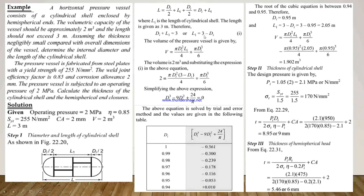Since the length is given as 3 m, L1 = 3 − Di, which is equation 1. Volume is given as 2 m³, and substituting into the volume equation: V = π·Di²·L1/4 + π·Di³/6. Putting the value of volume as 2 and simplifying the expression, we get Di³ − 9·Di² + 24/5 = 0. This equation is solved only by the trial and error method.